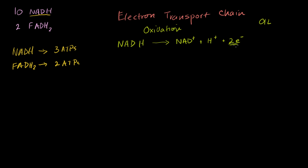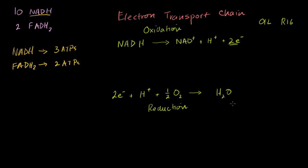This is really the first step of the electron transport chain — these electrons are transported out of the NADH. The last step of the electron transport chain is: two electrons plus two hydrogen protons plus one oxygen atom — one half of molecular oxygen — and you produce water. We're adding electrons, or gaining electrons, to oxygen. OIL RIG — reduction is gaining electrons. So this is the reduction of oxygen to water, and the oxidation of NADH to NAD+.